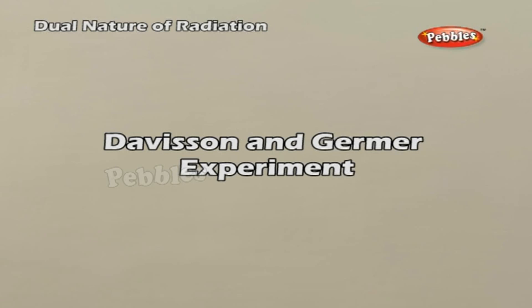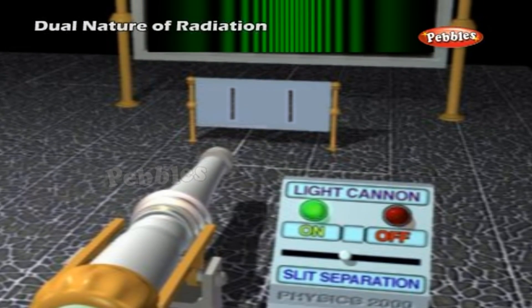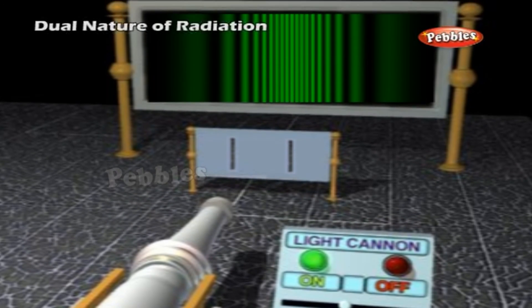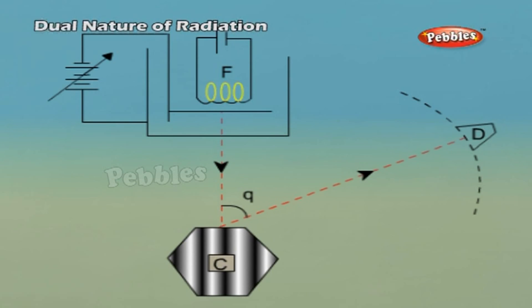Davison and Germer experiment. The first experimental proof of the wave nature of electron was demonstrated by C.J. Davison and L.H. Germer. The basis of their experiment was that since the wavelength of an electron is in the order of spacing of atoms of a crystal, a beam of electrons shows diffraction effects when incident on a crystal.